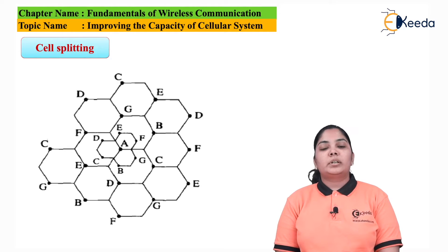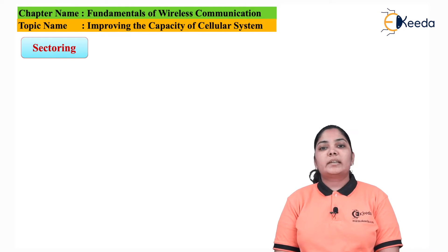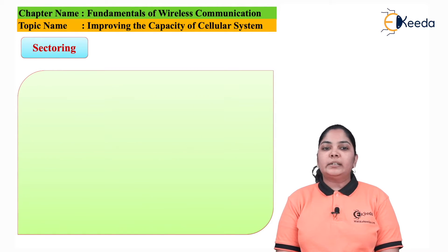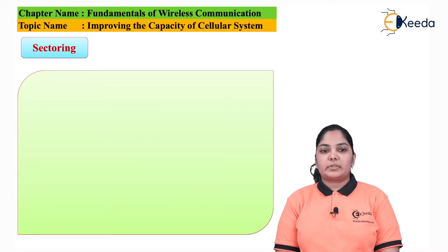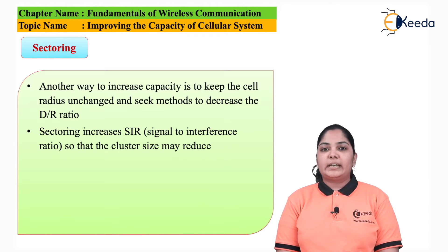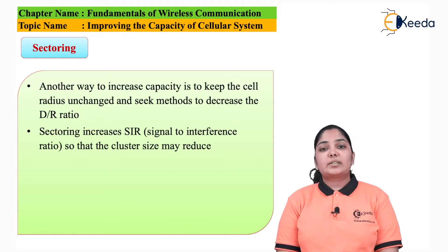Another method to improve the capacity of the system is sectoring. Here we keep the cell radius constant and convert every cell into sectors. Sectoring increases the signal-to-interference ratio so that the cluster size may reduce. We use directional antennas for every sector. This technique of decreasing co-channel interference and increasing system performance by using directional antennas is called sectoring.